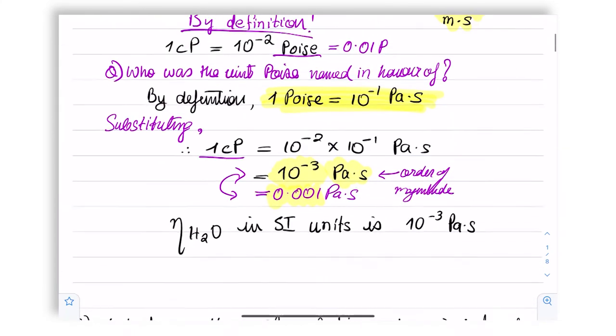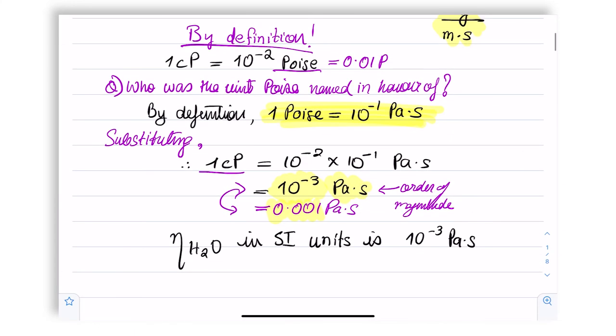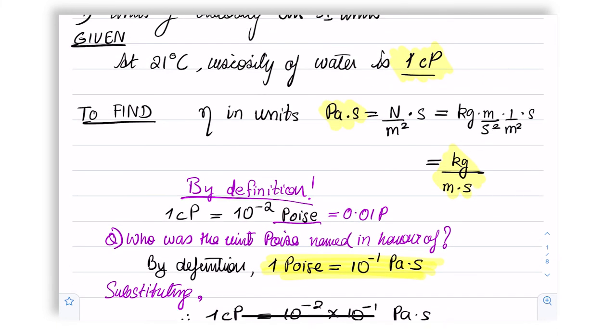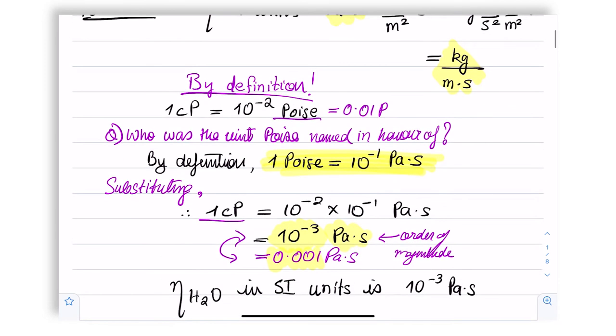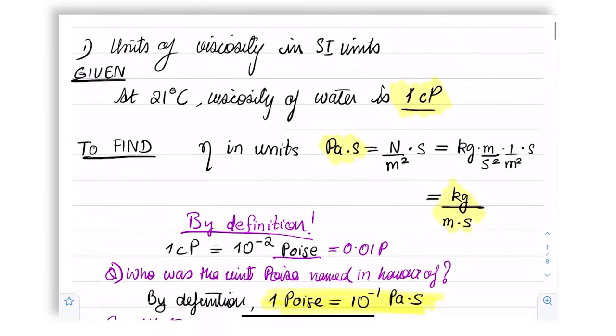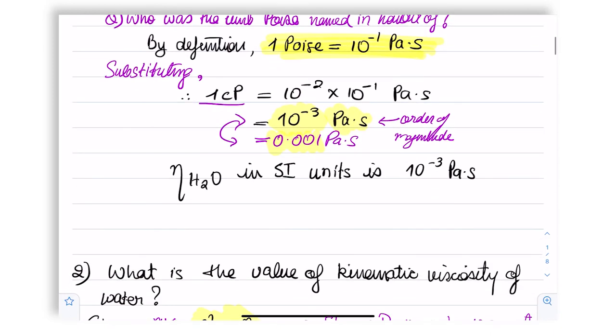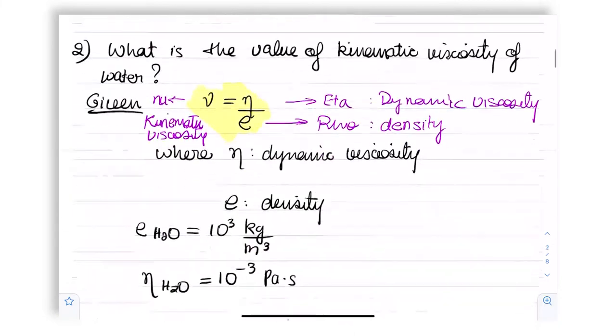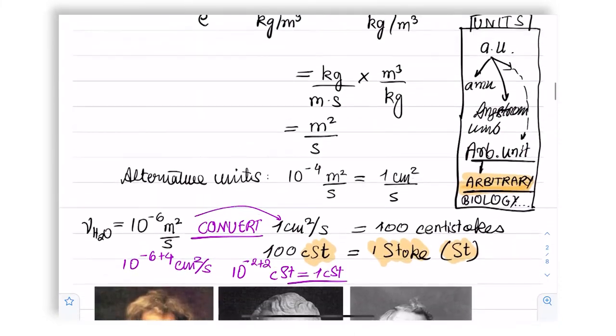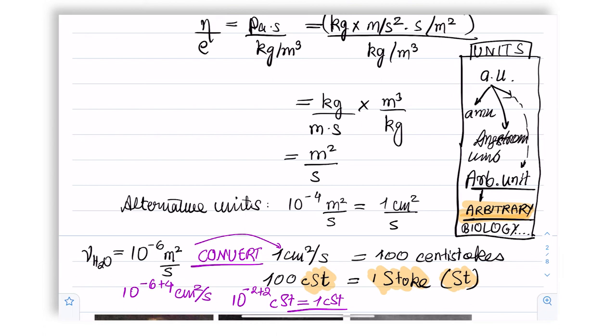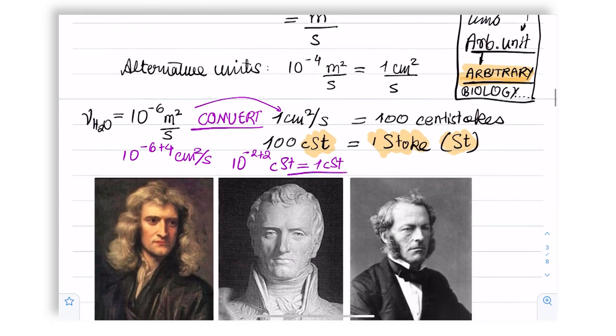You recall that we did something similar with centipoise, where we said that 10 to the power minus 2 poise is 1 centipoise, and 1 poise is 10 to the power minus 1 Pascal second. Viscosity of water is 1 centipoise, and that turns out to be 10 to the power minus 3 Pascal second. So in a similar manner, to keep things simple, 1 centistokes ends up being the kinematic viscosity of water, which in turn is 10 to the power minus 2 stokes.